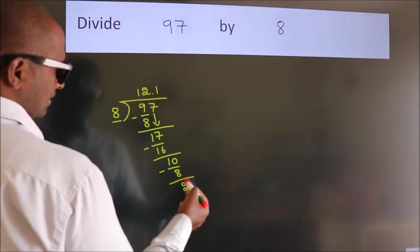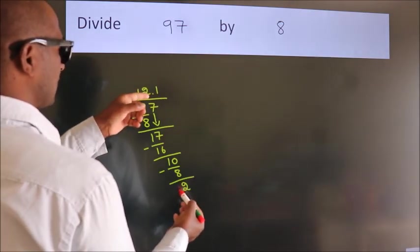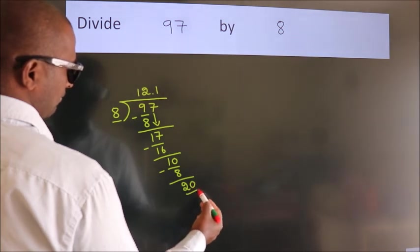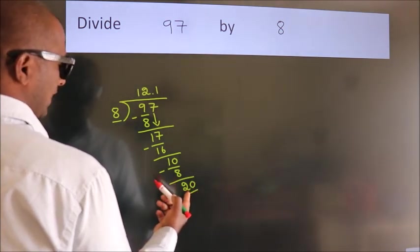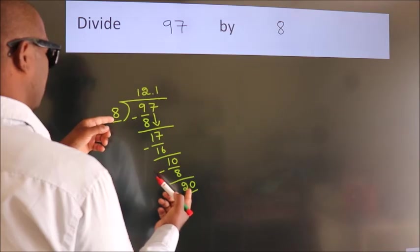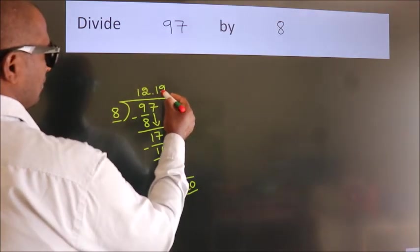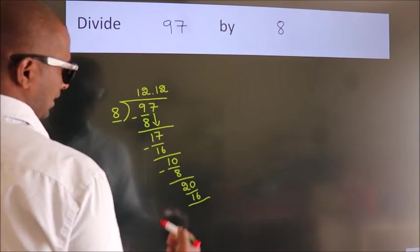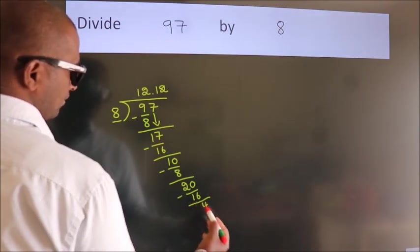After this, we already have the decimal, so directly take 0. So, 20. A number close to 20 in the 8 table is 8 times 2 is 16. Now, we subtract. We get 4.